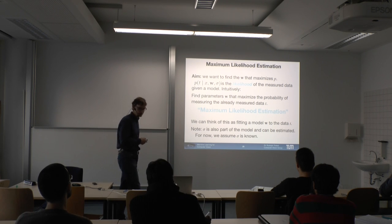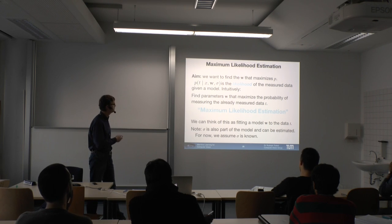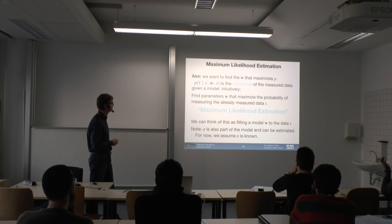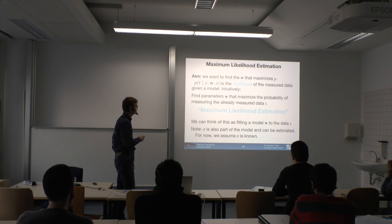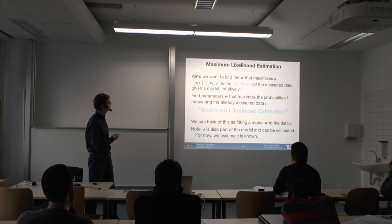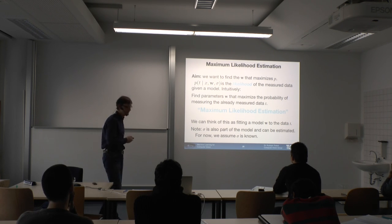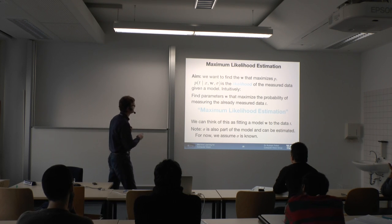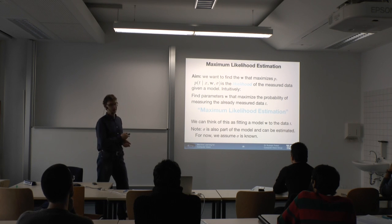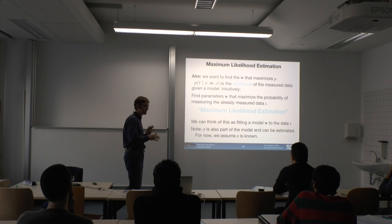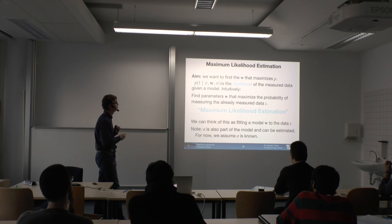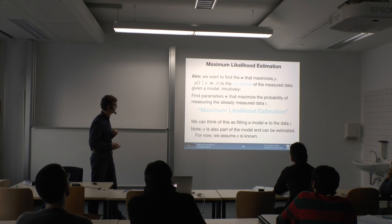We want to find W that maximizes the probability of measuring what we actually observed — this is the likelihood. The likelihood is: how likely is it that we measure the already-observed data given W? We call finding the W that maximizes this probability maximum likelihood estimation. We assume sigma is known — for instance, as sensor noise. The training data T and X are known; W is the unknown we want to find.